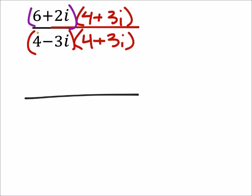So here I've got 4 times 4, which is 16, so I am skipping some steps on this. Here I've got 4 times 3i, which would be a positive 12i. I've got a negative 3i times 4, which is a negative 12i.